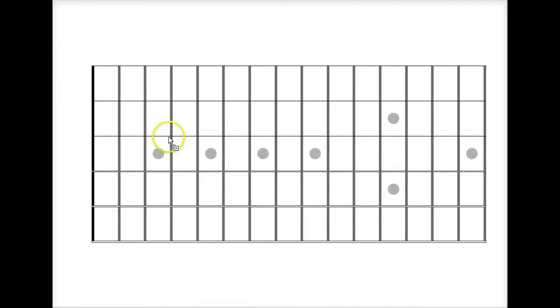So we'll start right here with the E. Whole step up to F sharp, whole step up to G sharp, half step to A, whole step to B, whole step to C sharp, whole step up to D sharp, and then half step up to E to round out the scale.